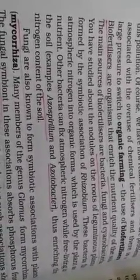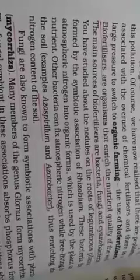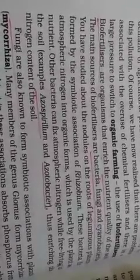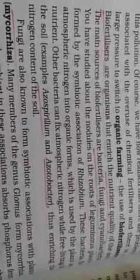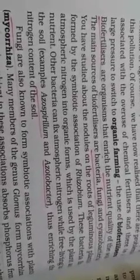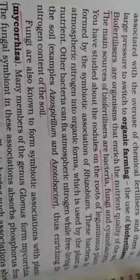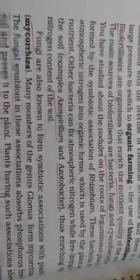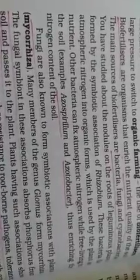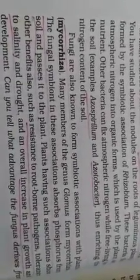The nitrites and nitrates converted by Rhizobium bacteria from atmospheric nitrogen become available to other plants and increase soil quality. There are also free-living bacteria — Azospirillum and Azotobacter — found in the soil, which have the same quality: they can fix atmospheric nitrogen and improve the nitrogen content of the soil.